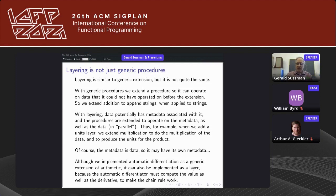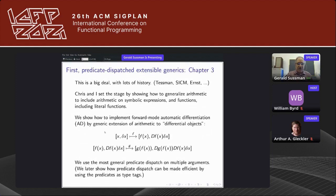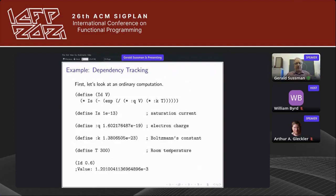Although we implemented the automatic differentiation as a generic extension of arithmetic, it can also be implemented as a layer because the automatic differentiator must compute the value as well as derivative to make the chain rule work. Let's go back to the problem I started with here. Here's an ordinary trivial computation. We've got a saturation current of about 10 to the minus 13th amperes for a typical diode. We have the charge on an electron, Boltzmann's constant, and the temperature. If I compute ID at 0.6 volts, which is a plausible voltage, I'm getting 1 milliamp approximately.